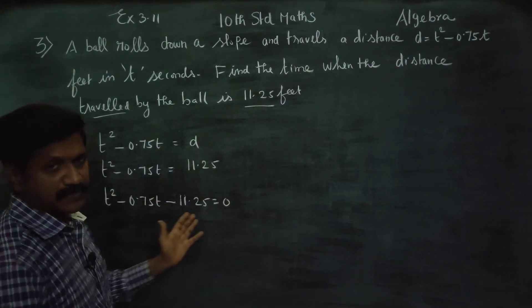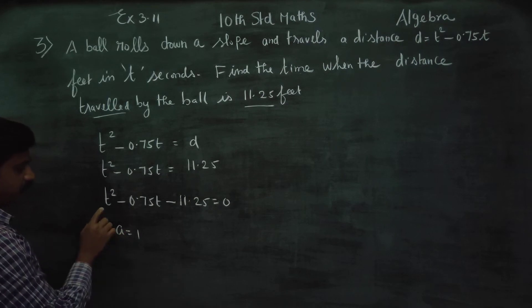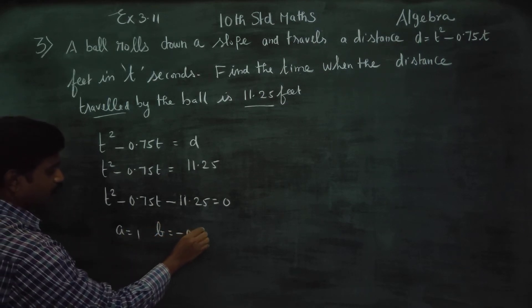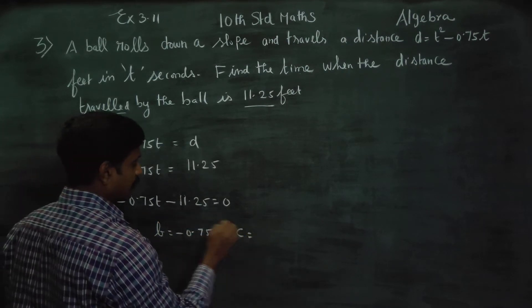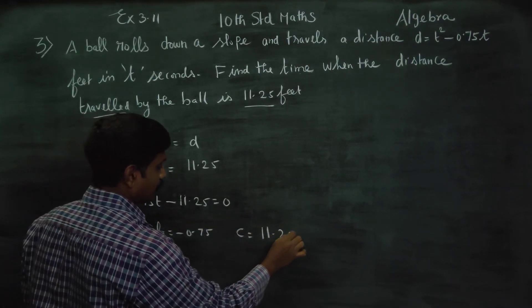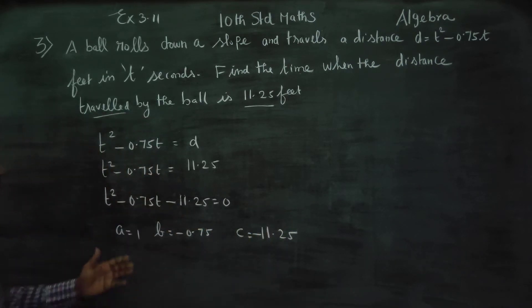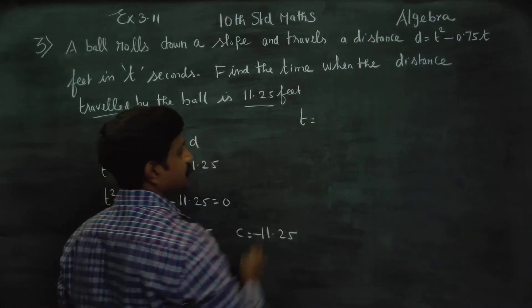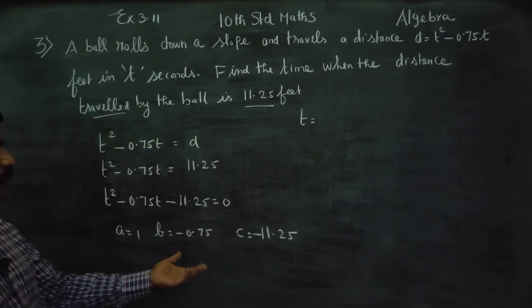Here a is equal to 1, b is equal to minus 0.75, and c is equal to minus 11.25. This is the quadratic equation we need to solve for time.